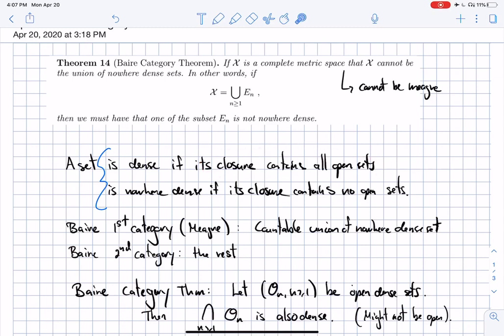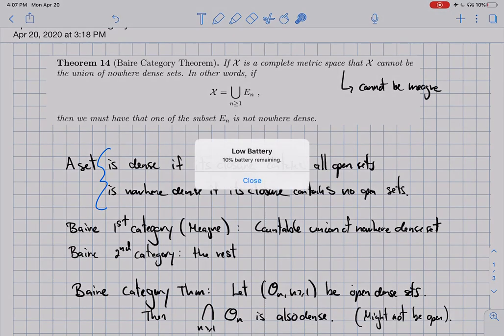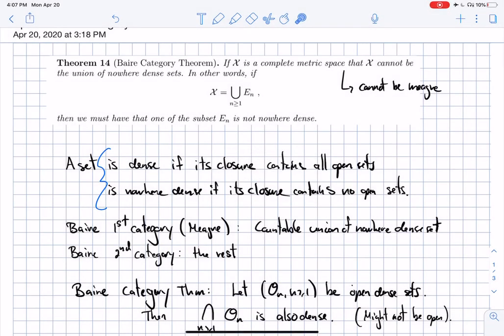So a set is dense if its closure contains all open sets. Now, the other extreme of that is that if a set is nowhere dense, that means its closure contains no open sets whatsoever. These are the two extremes. That means if you're not nowhere dense, it's a bit confusing with the double negation, but that means that at least one of the En here must have an open set.